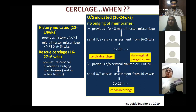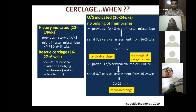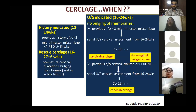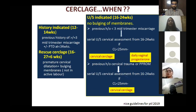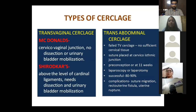Ultrasound-indicated cerclage is done from 16–24 weeks when there is no bulging of membranes. For patients with fewer than three mid-trimester miscarriages, do serial ultrasound; if cervical length is less than 25 mm, offer either cerclage or daily vaginal progesterone. However, if there is a history of cervical trauma or PPROM and cervical length is less than 25 mm on serial scan, go directly for cerclage — vaginal progesterone has no role in those cases.